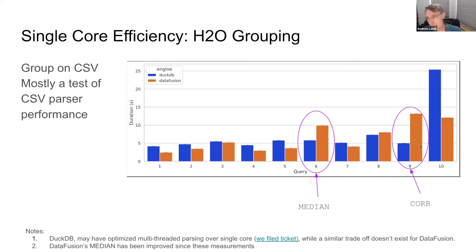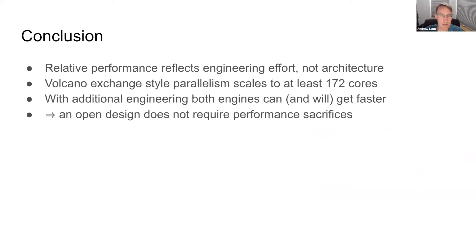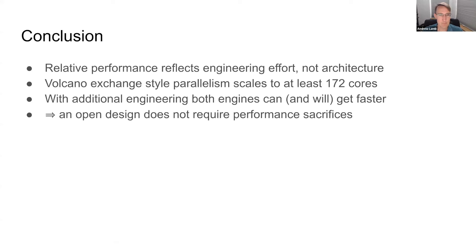The conclusion from all this is that relative performance reflects engineering effort — much more so than higher-level architectural choices. Volcano-style exchange parallelism may not be the current vogue in database implementation, but it worked just fine in our measurements up to 172 cores and was not significantly worse than the push-based morsel-driven parallelism style. Both engines can and will get faster. You can have an open-source, extendable, modular architecture and still get very fast performance — that's the conclusion.